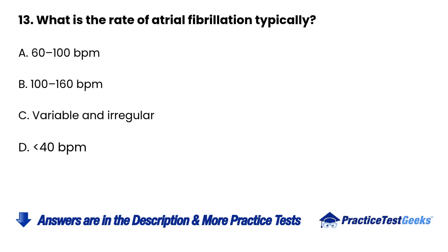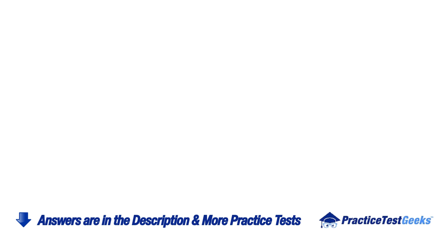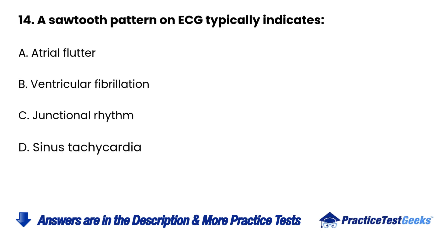13. What is the rate of atrial fibrillation typically? A. 60 to 100 BPM. B. 100 to 160 BPM. C. Variable and irregular. D. Less than 40 BPM.